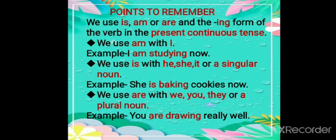We use 'is' with he, she, it, or a singular noun. For example, she is baking cookies now. We use 'are' with we, you, they, or a plural noun. For example, you are drawing really well.